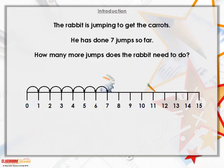Here we have a rabbit, and he's jumping to get to the carrots, but he's done seven jumps so far, so we're not starting at number one, he's starting at number seven. How many more jumps does he need to do to get to the carrots?